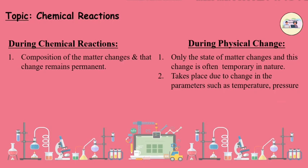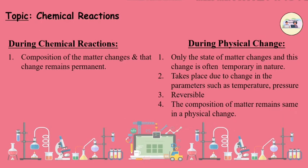a physical change takes place due to the change in parameters such as temperature and pressure. A physical change is often reversible. The composition of the matter remains the same in physical change. If composition of matter changes during a process, then it is called chemical change.